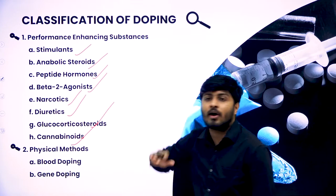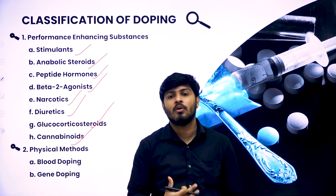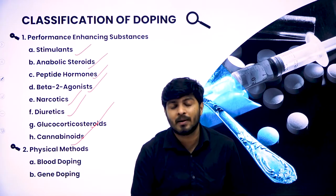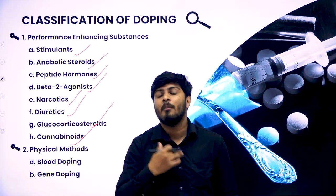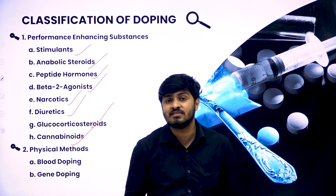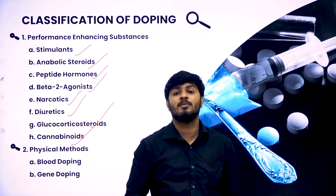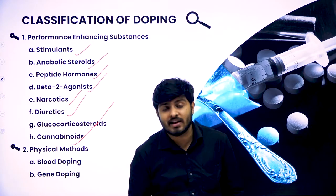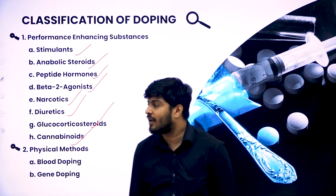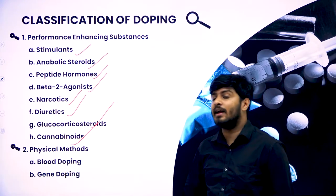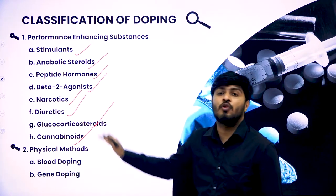Next you have beta-2 agonists, which are basically used in asthma drugs where your windpipe is expanded so that oxygen reaching the blood is much greater in volume and quantity — and that is exactly what is required in sports when you do intensive activity. The amount of oxygen required during intensive activity is much more, and this makes it even more possible. The person doing that intensive activity makes it look very easy compared to others performing naturally, making it an unfair activity — that's why that drug is also prohibited.